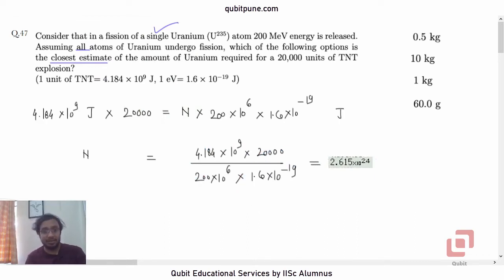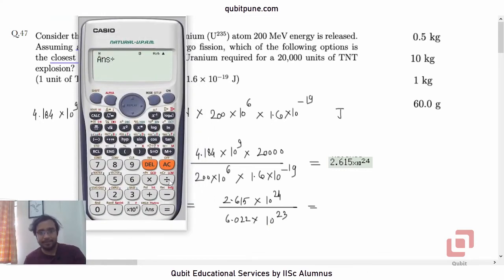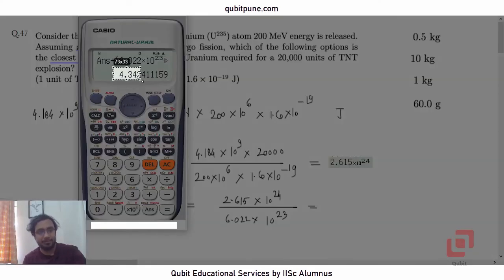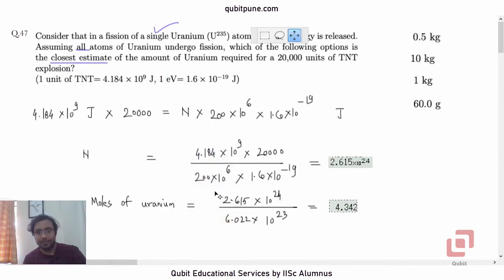So how many moles of uranium will be required? Moles of uranium will be this number, 2.615 × 10^24, upon Avogadro's number, 6.022 × 10^23. So let us divide this by Avogadro's number, 6.022 × 10^23, that is 4.342. This is the number of moles.